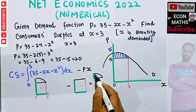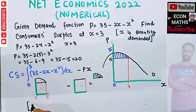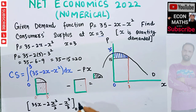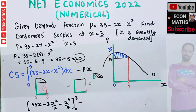Evaluating the integral: the integral of 35 is 35x, minus 2 times the integral of x which is x squared over 2, minus the integral of x squared which is x cubed over 3. We evaluate this from 0 to 3, then subtract the total expenditure, which is price 20 multiplied by quantity 3.